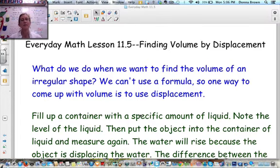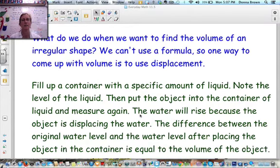So we have been looking at how to find the volume of a prism, how to find the volume of a cone, how to find the volume of various shapes that we have formulas for. But what do we do when we want to find the volume of an irregular shape? We can't use a formula, so one way to come up with the volume is to use displacement. And you'll be doing this in class tomorrow with a number of different irregular objects.